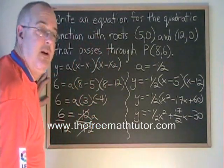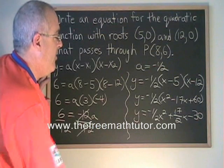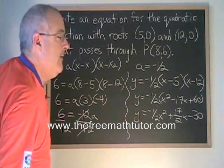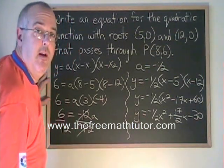So our final equation in ABC form is y equals negative 1/2 x squared plus 17/2 x minus 30.